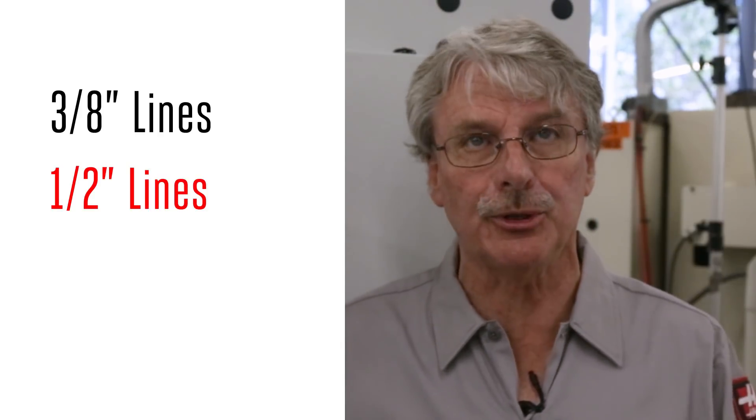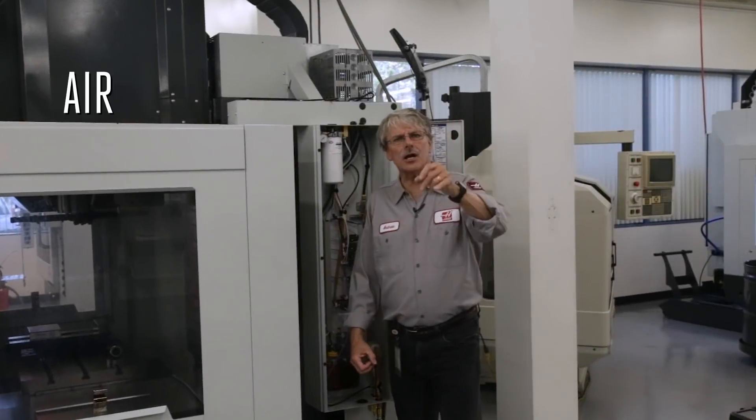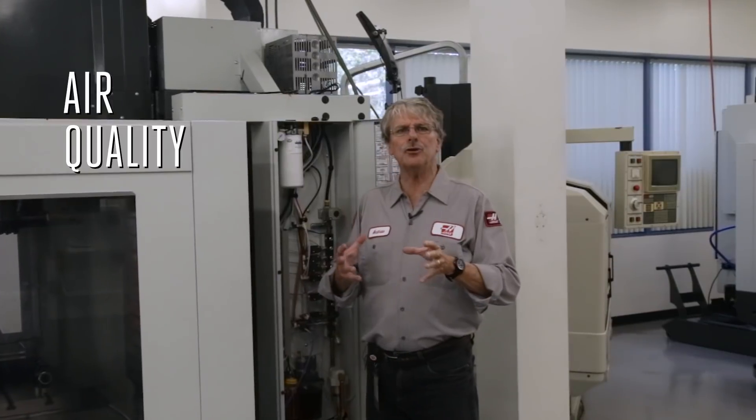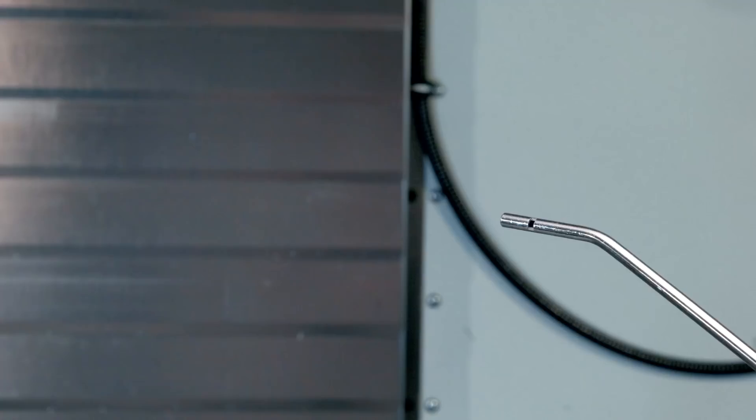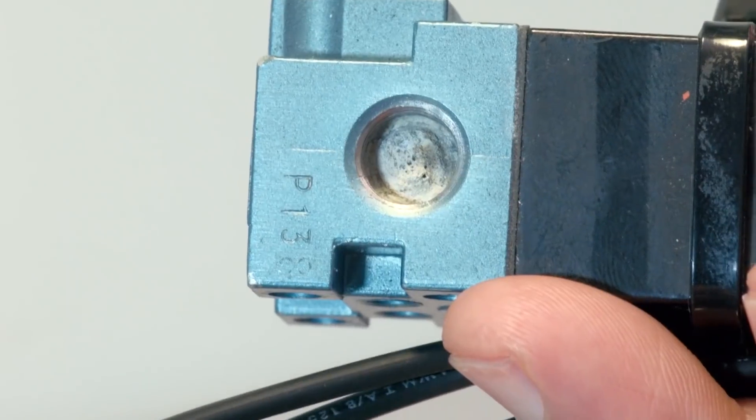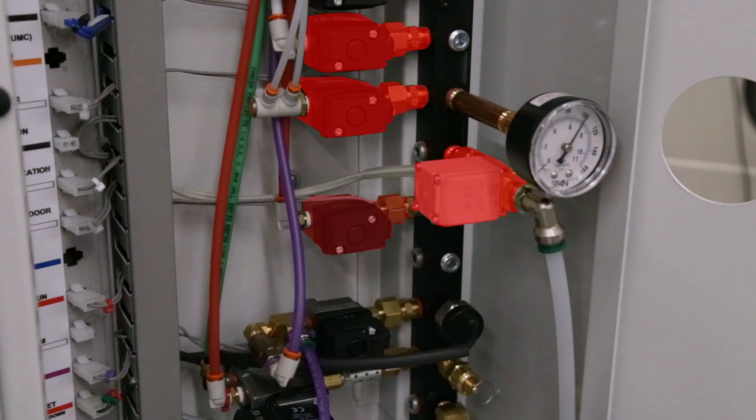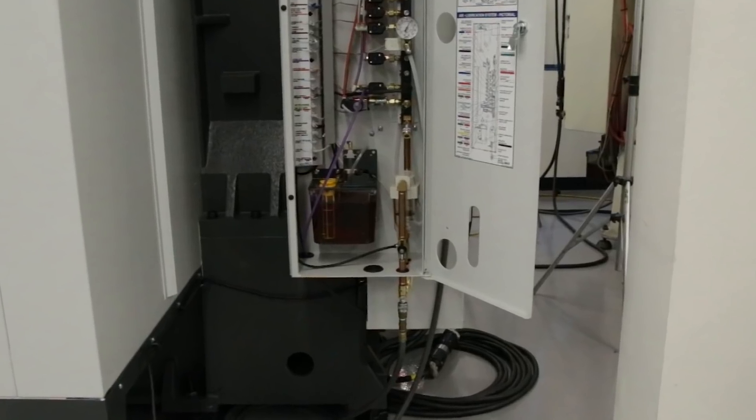Now let's talk about the quality of the air you're supplying. It should always be clean, dry air going to your machine. Water in your airlines is not just a nuisance, it can also cause serious damage to the machine. These solenoids here are especially vulnerable to contamination by both water and particulates.